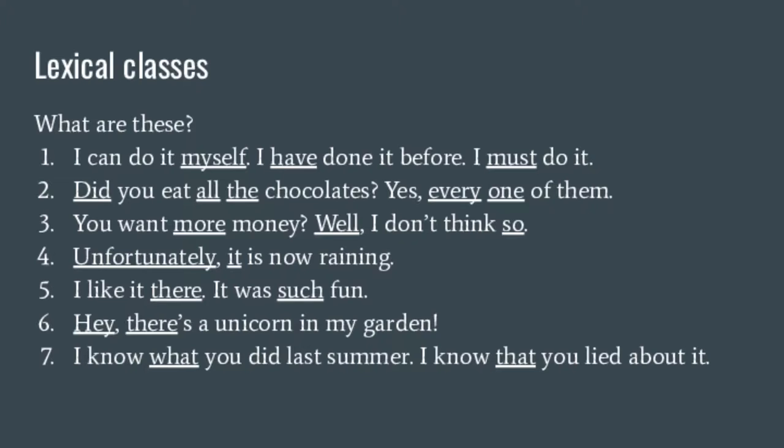Look at your window and you see a unicorn — you say, 'There's a unicorn in my garden.' 'I know what you did last summer.' 'I know that you lied about it.' The 'what' and the 'that' are special things for putting one sentence — like 'you did something last summer' — into a more complex sentence. These are for forming complex sentences, and we'll get into that in syntax.